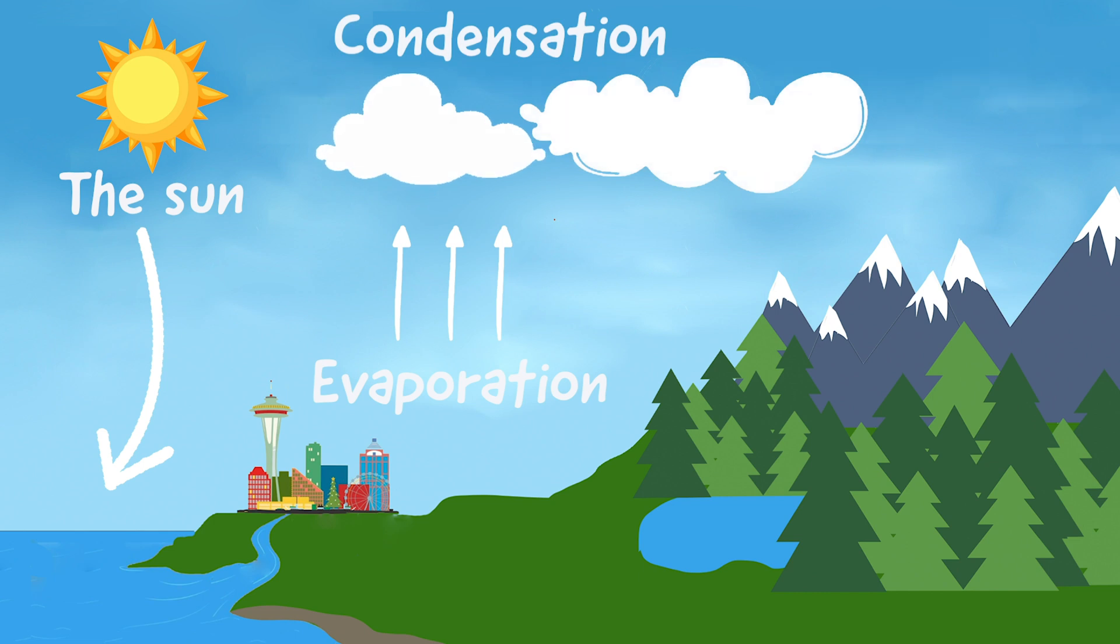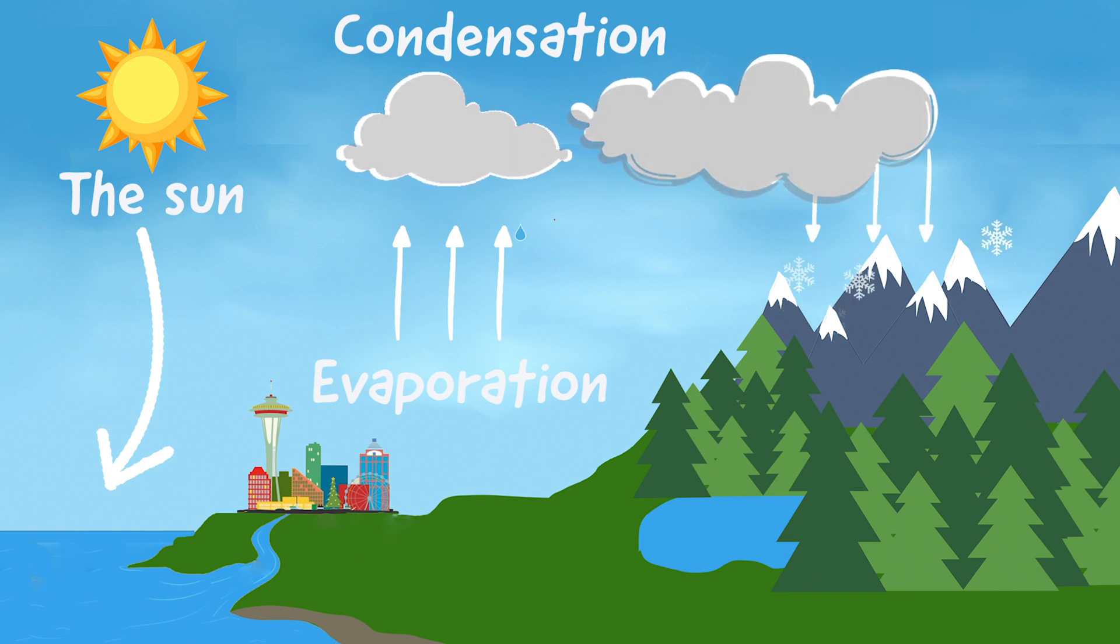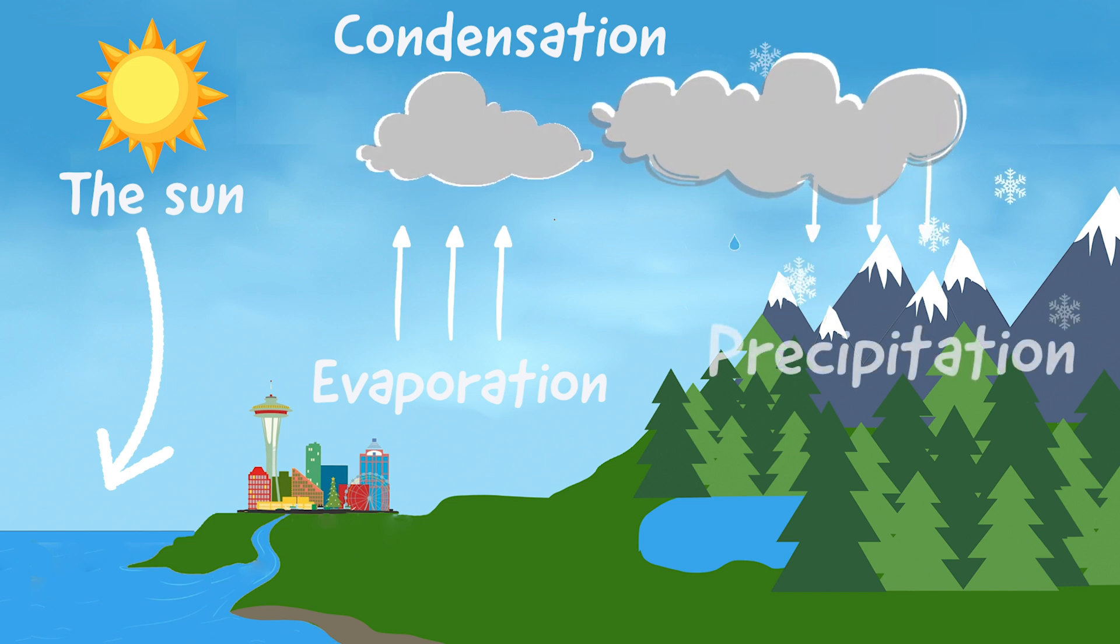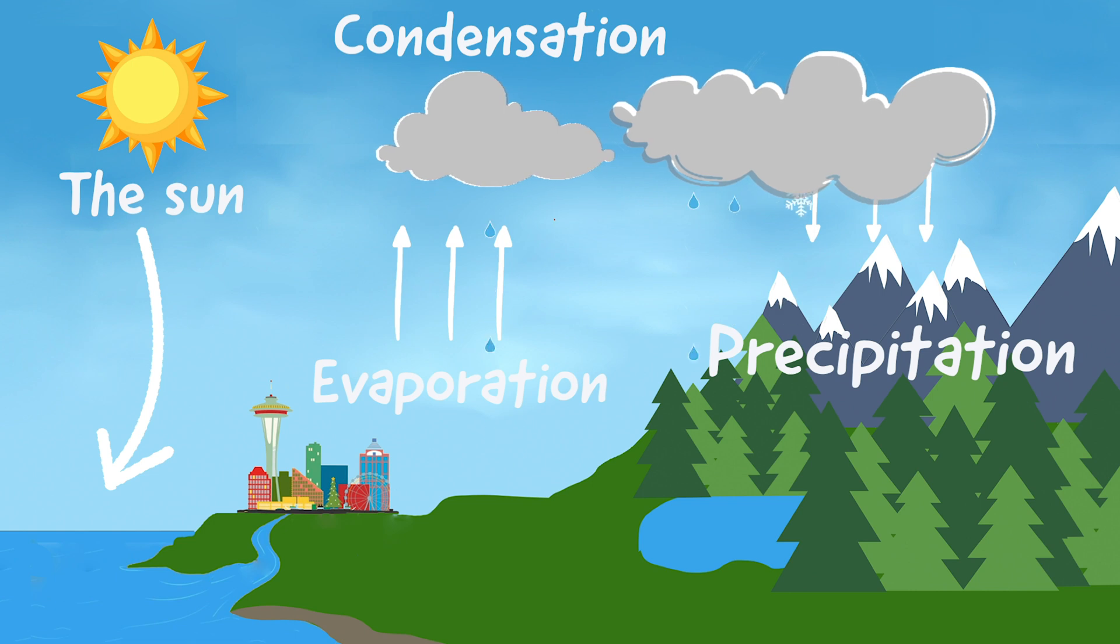As more and more water vapor condenses into clouds, the clouds become heavier and heavier until they release water droplets in the form of snow, sleet, hail, or rain. What's this part of the cycle called? If you guess precipitation, you're right!